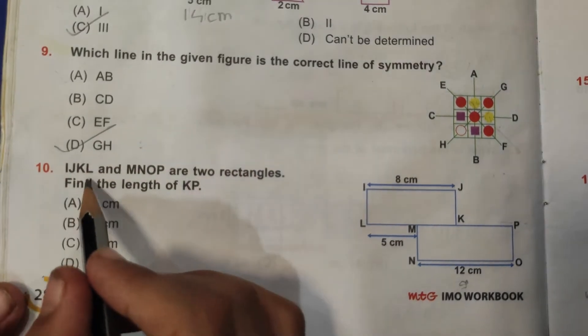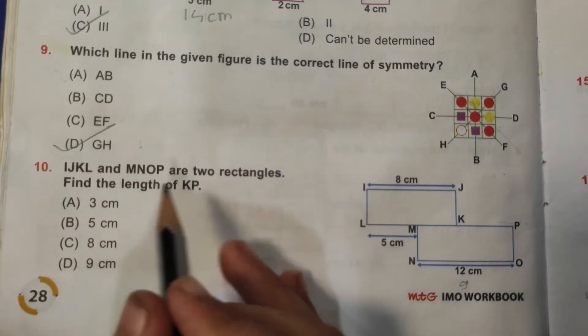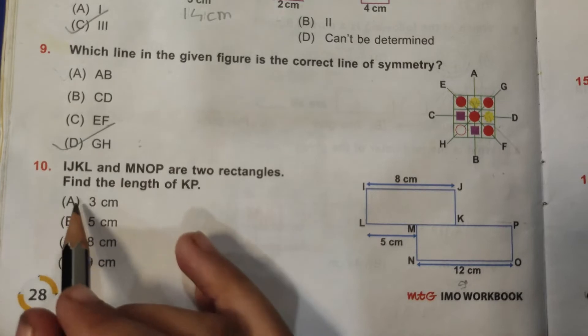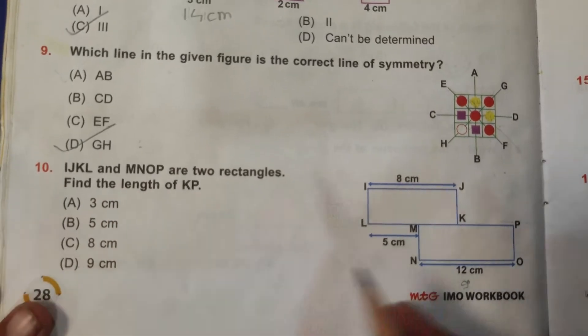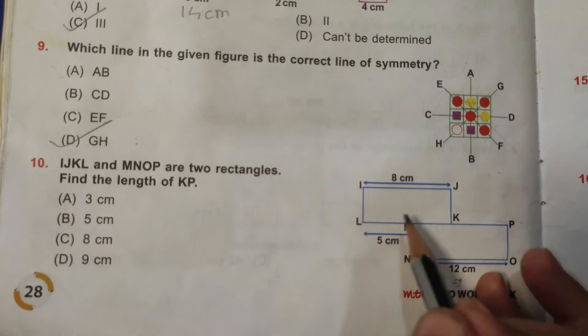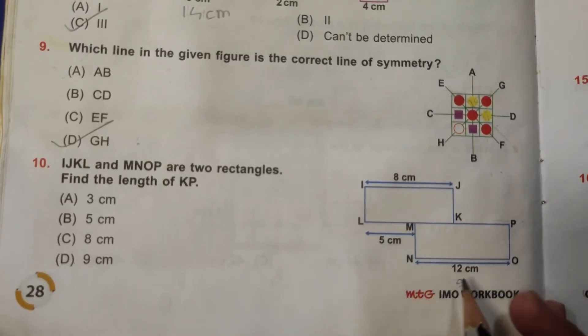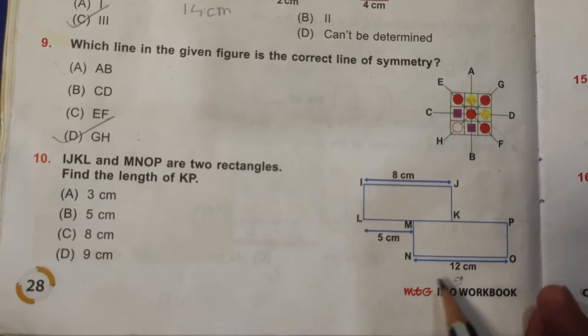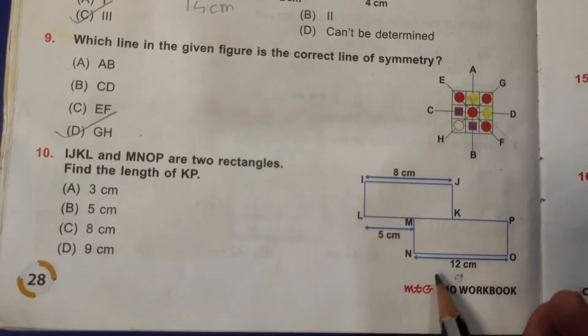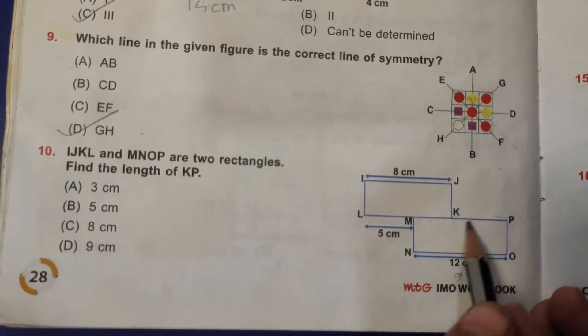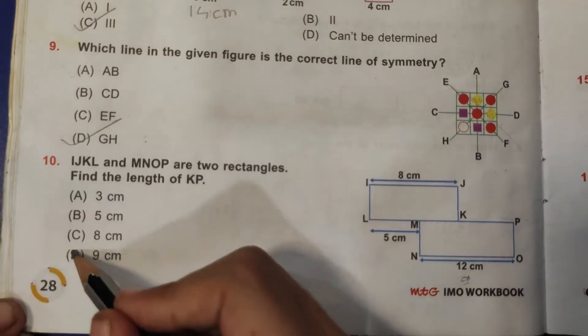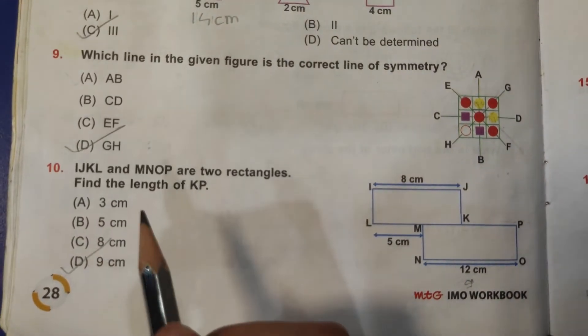Tenth question: IJKL and MNOP are two rectangles. Find the length of KP. So here it is 8 and here is 5. So 8 minus 5, that is 3. And then it is 12 centimeters. So 12 minus 3, that is 9. Means the length of KP is 9 centimeters. So D is the correct answer.